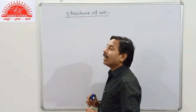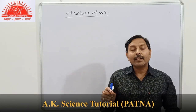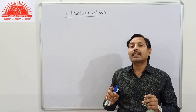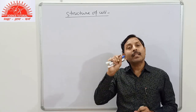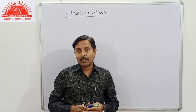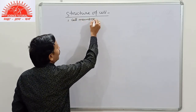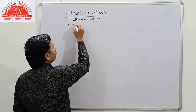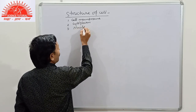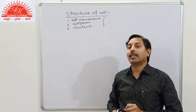Today we have to study about the structure of a general cell. Various cells show differences in their shape and structure, but the basic features of all cells are almost similar — this is called a generalized cell. In a generalized cell there are three basic parts: the first is cell membrane, second is cytoplasm, and third is nucleus.